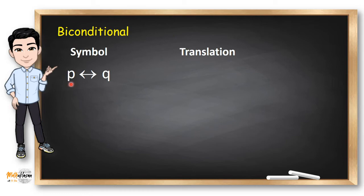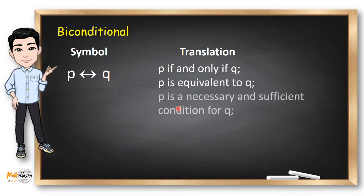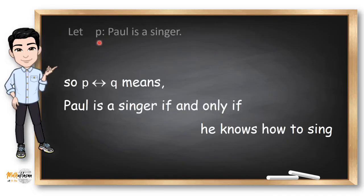Now, a biconditional statement in symbols can be read as P if and only if Q, P is equivalent to Q and P is necessary and sufficient condition for Q. This is like the equal symbol in an equation. For example, let P be the proposition Paul is a singer and Q be the proposition Paul knows how to sing. So this symbol means Paul is a singer if and only if he knows how to sing.